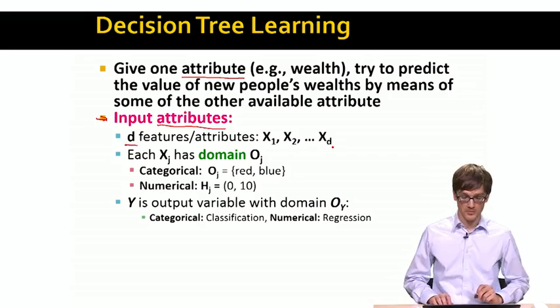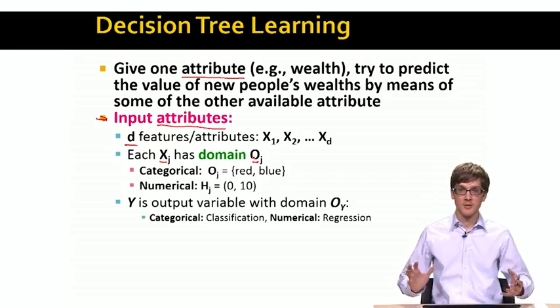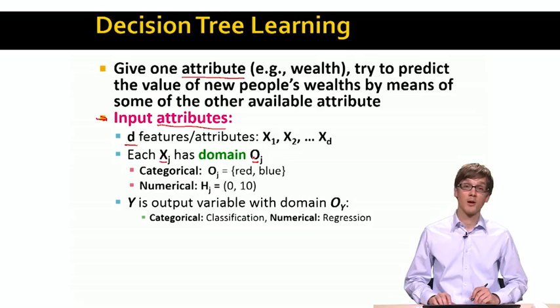And then each feature, let's call it j, has a domain O sub j. When I say a domain, I mean what is the number of, or what are all the different values that this feature or this attribute can take? For example, if the feature x sub j is the favorite color of a person, this would be what we call a categorical attribute. It can take values red, green, blue, and so on.